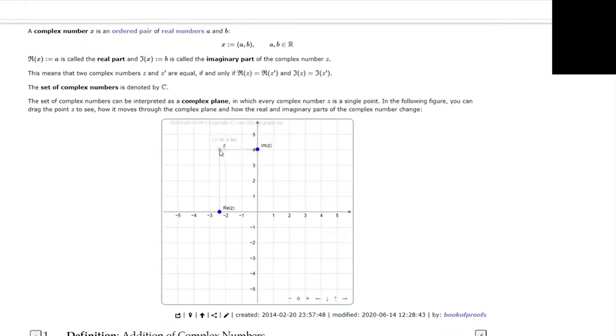As you can see, JSXGraph allows creating an interactive system of coordinates, in which you can, for instance, select one particular complex number and better understand that its real and imaginary parts are simply the projections of the number to the x- and y-axis.